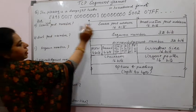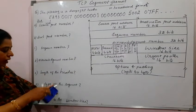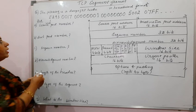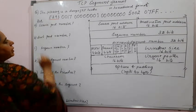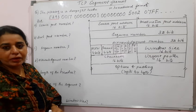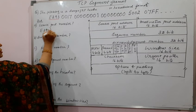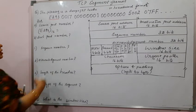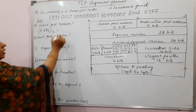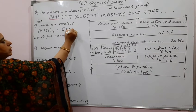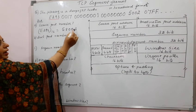The field starts with the source port address, which is 16 bits. If each number represents 4 bits, then four hex digits completely represent your source port address. So you are reading E293 — this is in hexadecimal. To arrive at the port number, convert this hexadecimal number to decimal. When you convert, you get 58003. So the source port number is 58003.